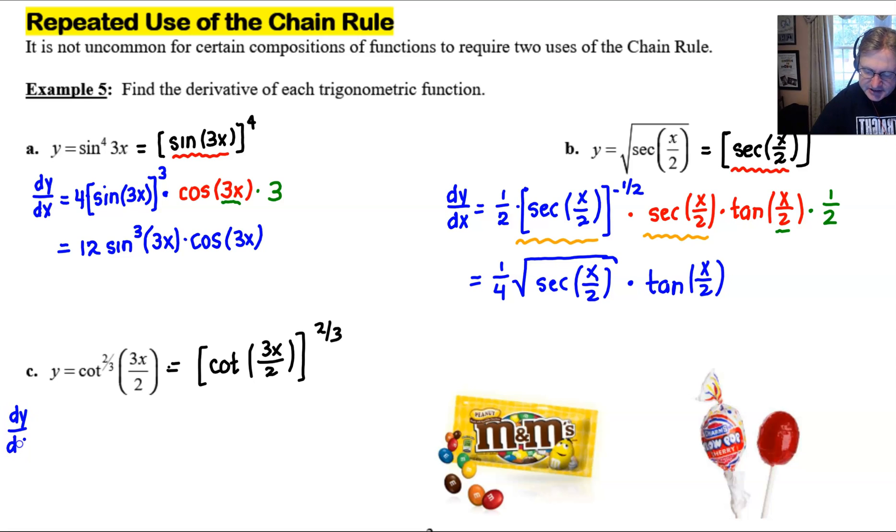So dy/dx starts with the 2/3 coming out to the front, multiplying by our good friend the cotangent of 3x over 2. And now we would have this cotangent all raised to one power less. 2/3 minus 1 is negative 1/3. Our next job is to take the derivative of yet another pretty trig word, cotangent of something else. So we have to think: the derivative of tangent is secant squared, so the derivative of cotangent would be negative cosecant squared, and of course of our 3x over 2. And then we finish by taking the derivative of the 3x over 2. Think of that as 3/2 times x, so its derivative would just be 3/2.